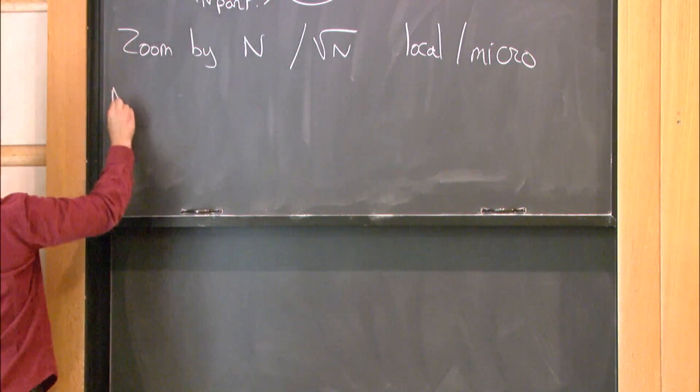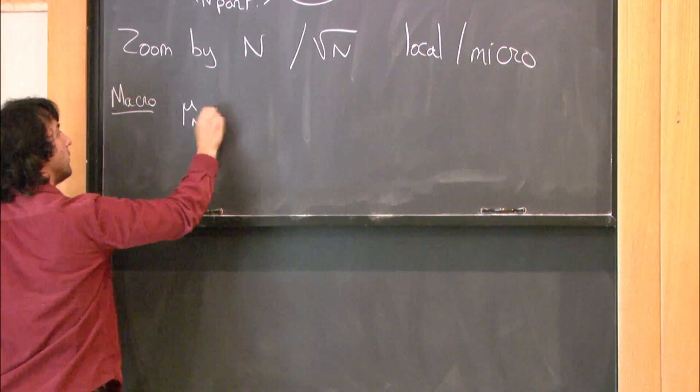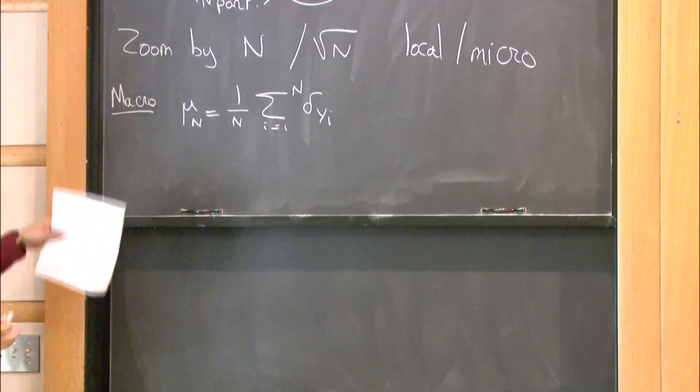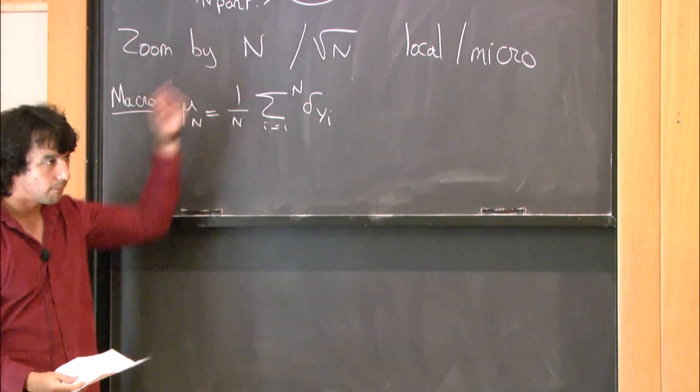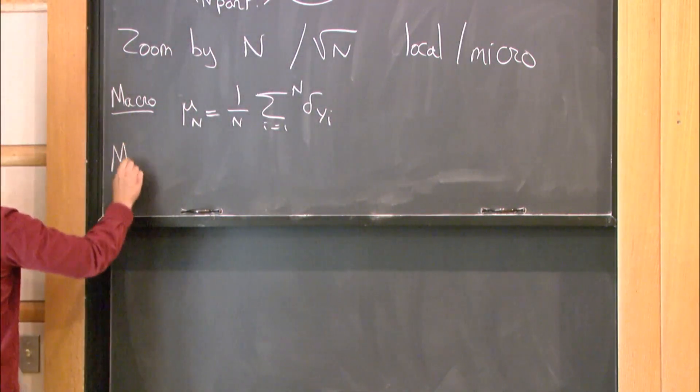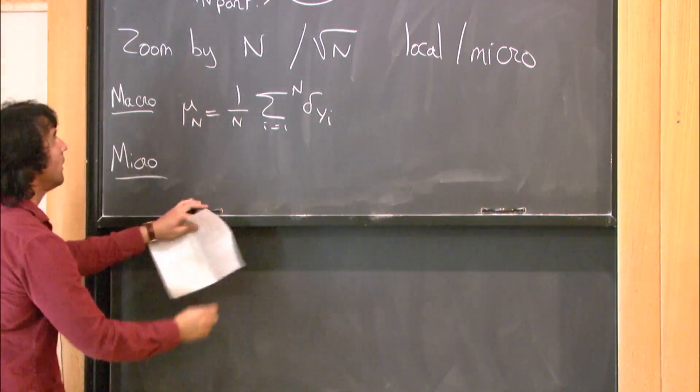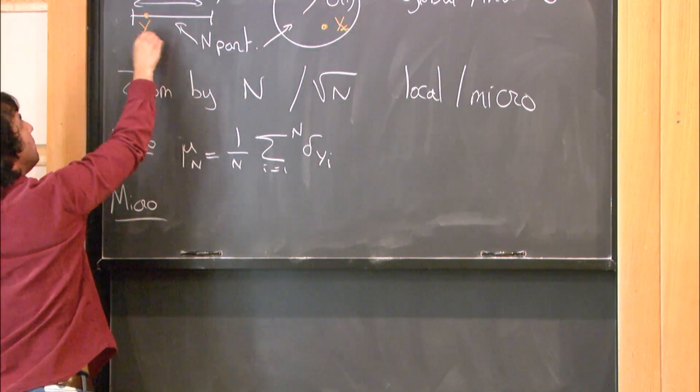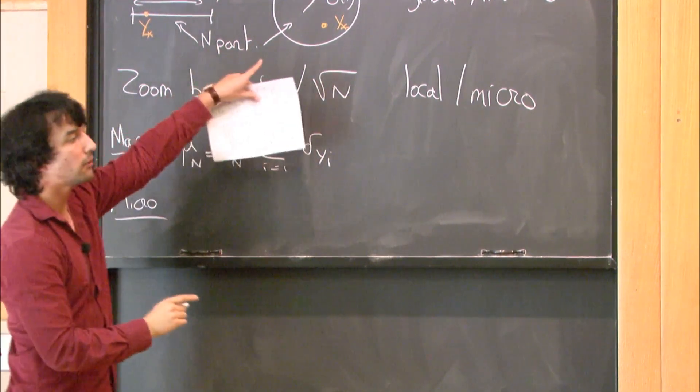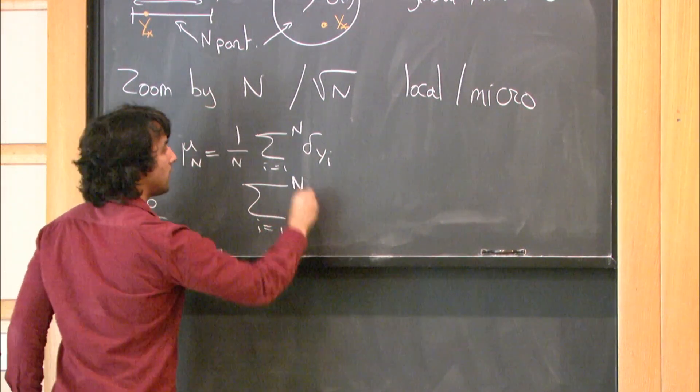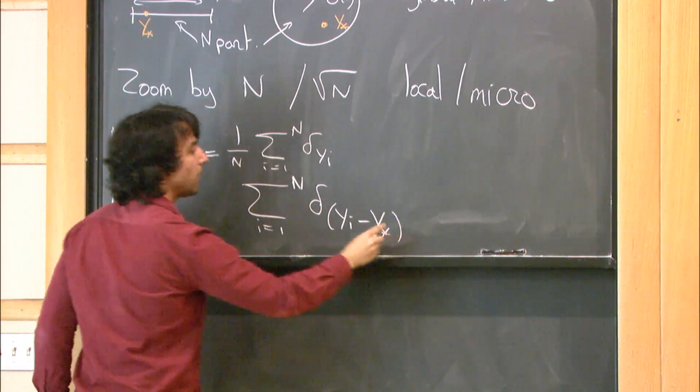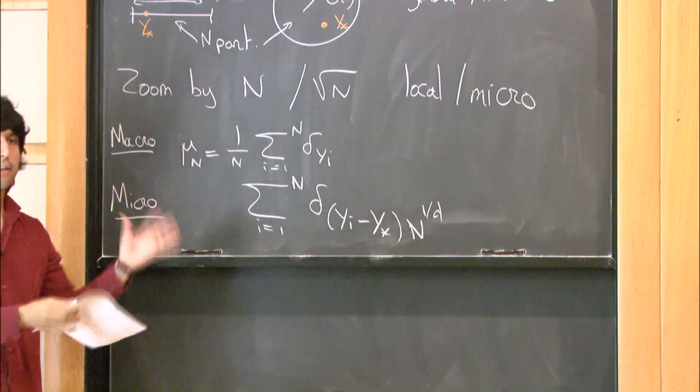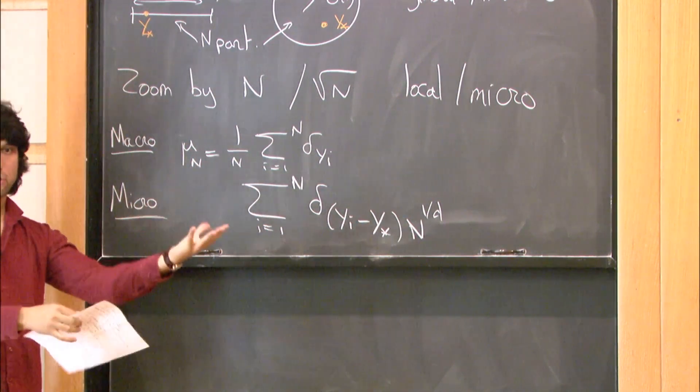So in the macroscopic scale, so the global scale, the interesting object is this. So I put a Dirac mass at each point, and I divide by n. So I have a probability measure on R or C, which encodes the global behavior of the particles. If you go at the micro scale, one thing that's relevant to do is to fix a point here. Let's call it y-star here. It doesn't have to be a particle, it's just one point. And you want to look at what happens at the local scale around y-star. So you will take each particle, and then center around y-star. And then multiply by the right thing. And you don't divide by n. So here you have a collection of points that describe the local configuration around y-star. That's the local scale observable.